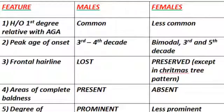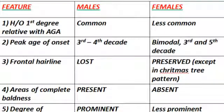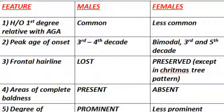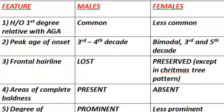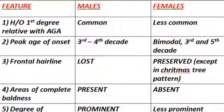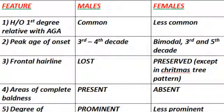The alopecia differs in males and females. The main difference is the preservation of the frontal hairline in females, which is lost in males. Second, in males areas of complete baldness can be present, whereas in females complete baldness is rare — hair loss is mainly in a diffuse pattern with some hair always present in each area. Third, the degree of miniaturization is prominent in males and less prominent in females. Lastly, androgenetic alopecia is more common in males and less common in females.